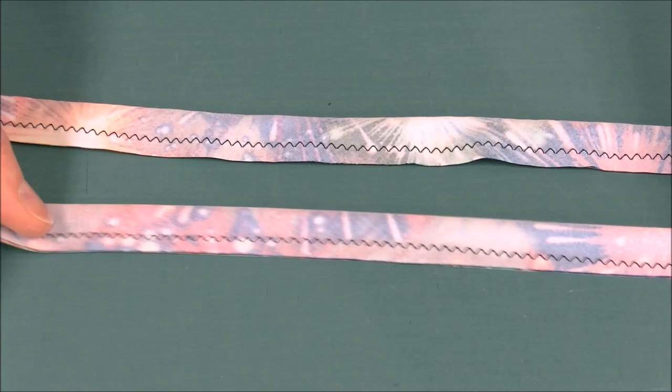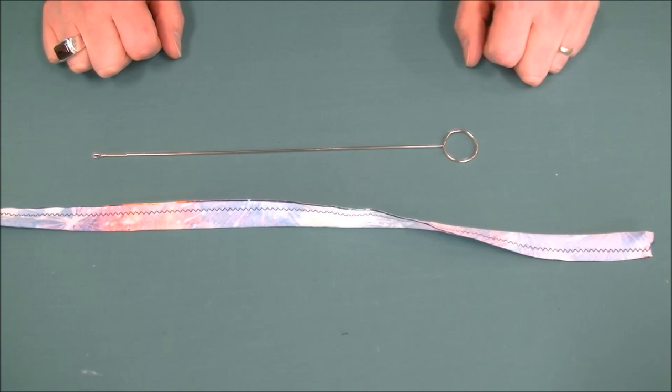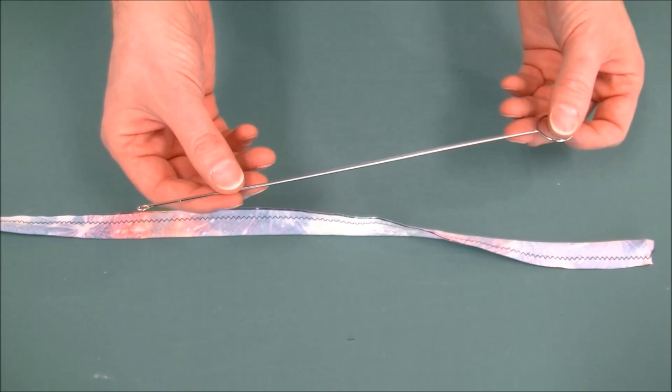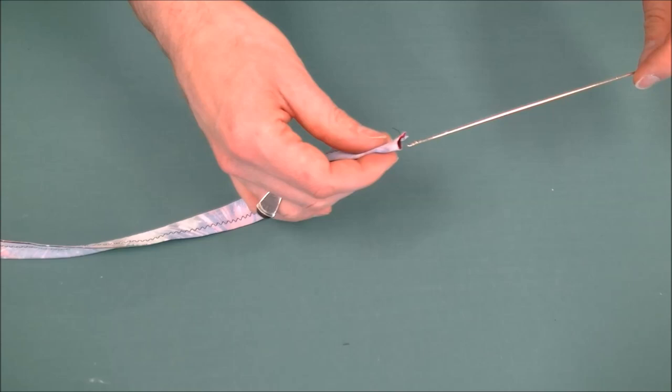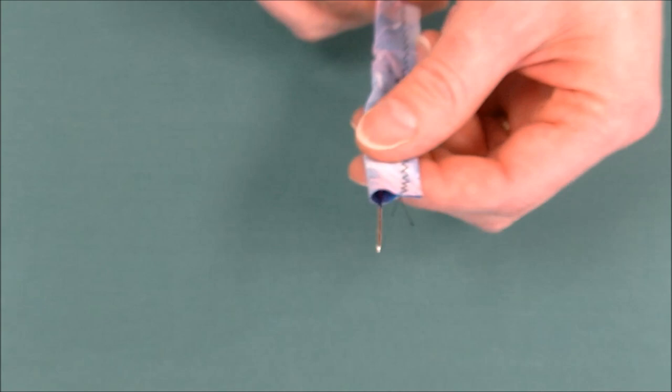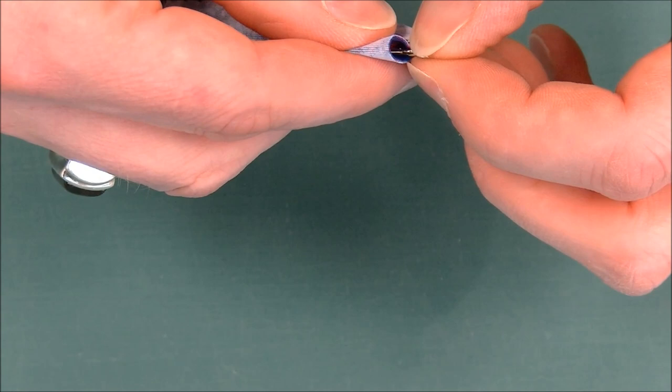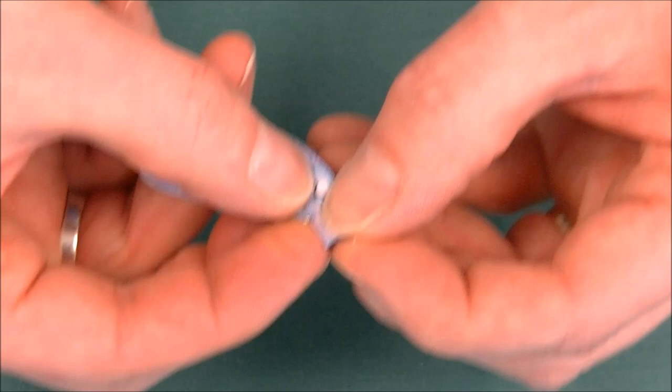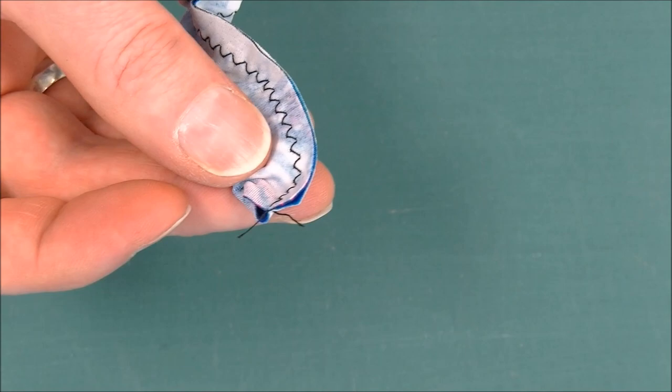Now we need to turn our straps inside out so that we see our nice fun print. We're going to use this loop turner tool, it's a really handy little tool. We take the hook end and put that inside the tube and feed it all the way to the end, then carefully hook the fabric with the little spike in it.